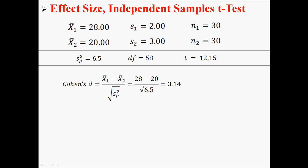Well, what does that 3.14 actually mean? There are certain criteria for Cohen's d. If your d is about 0.2, that means you have a small effect. If it's about 0.5, that means you have a medium effect. And if it's 0.8 or larger, that means you have a large effect.